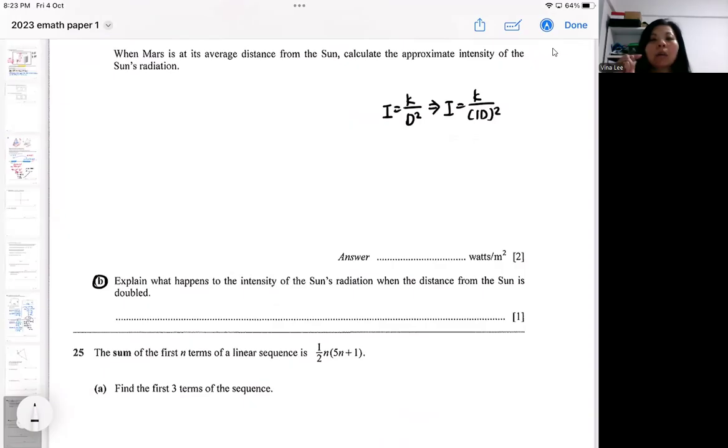So right now, the question is asking, what happened to the intensity when the distance is doubled? So when d is doubled, so 1d actually becomes 2d.